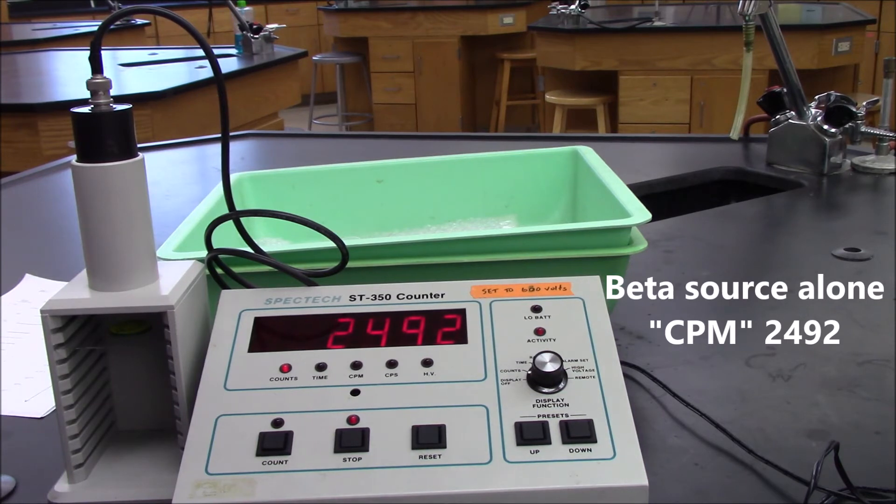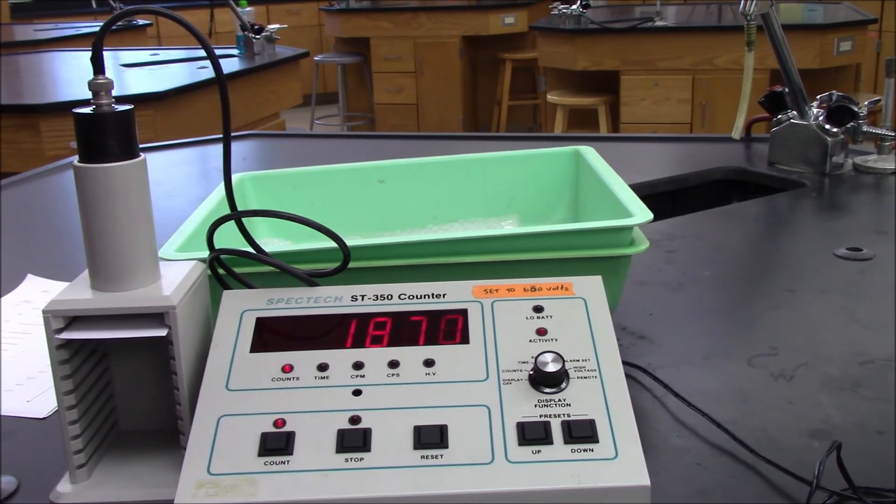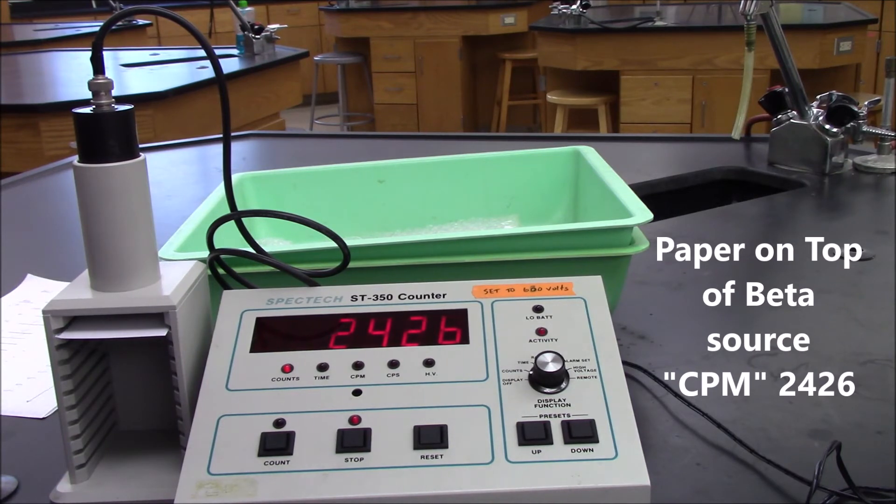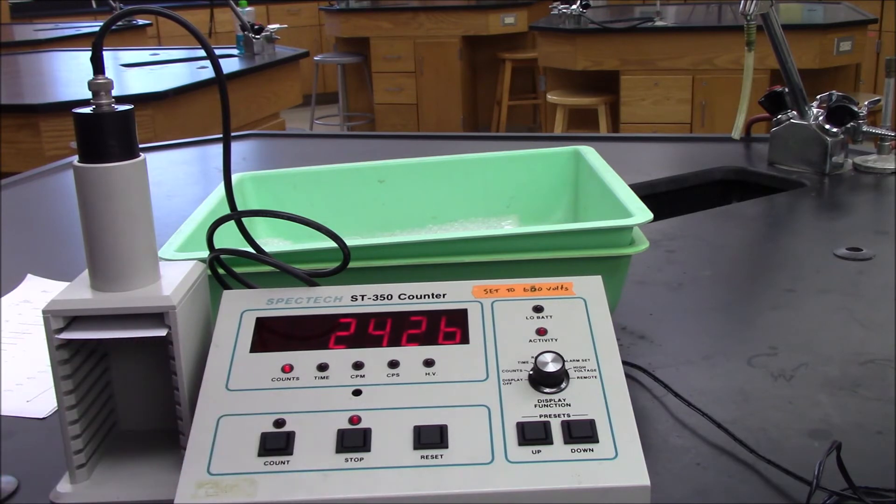Now we're going to see what happens when we put a piece of paper on like we did with the alpha source. So we're coming up toward the end of the piece of paper over the beta source, and you can see we're getting very little change. It's almost exactly the same number of counts per minute, showing that the beta particles passed right through. There's a little bit of a random nature to radioactive decay, but you can see the paper had no effect.